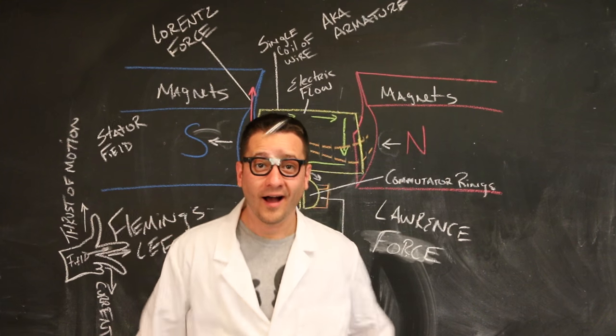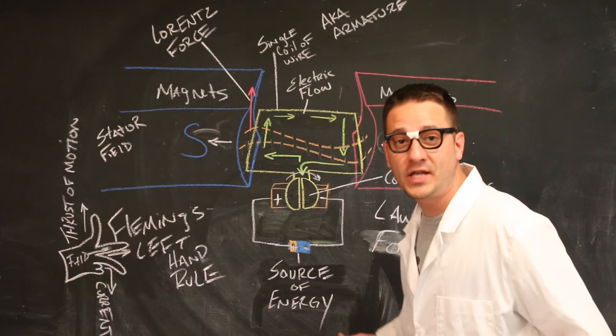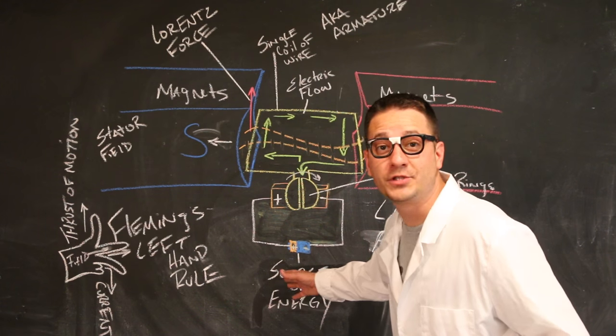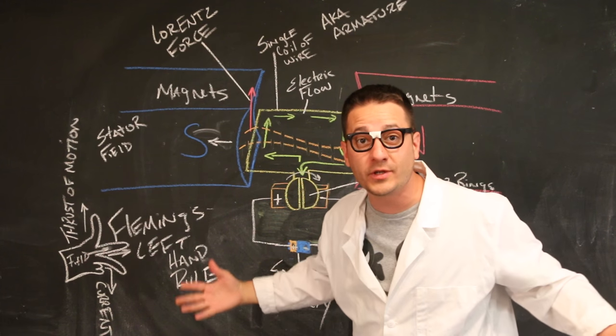These are the magnets. We have the commutator rings. We have the source of energy. And the single coil of wire that goes all the way around, also known as the armature.